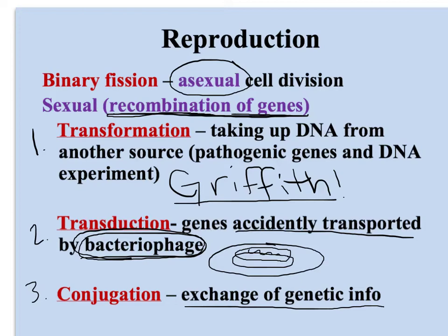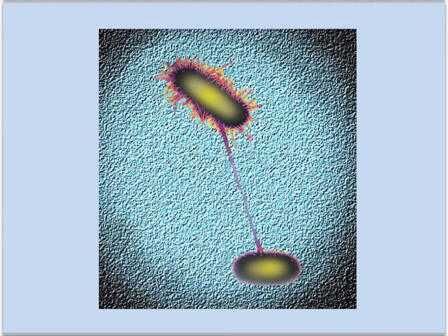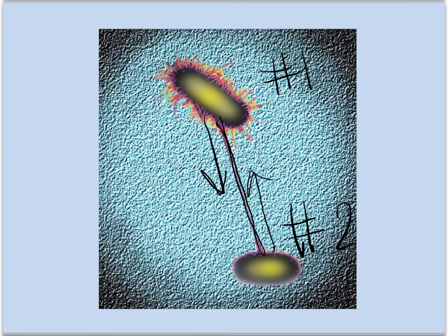On the next slide is an example of this. So here's bacteria cell number one and number two, and here is their sex pilus. They are going to pass genetic information across this pilus. They're not making a new bacteria cell — they're not making a baby. They are just exchanging genetic information.